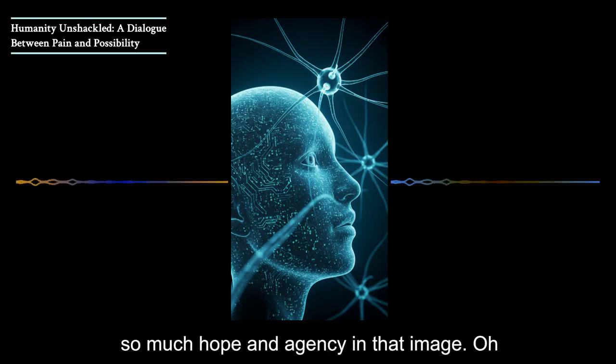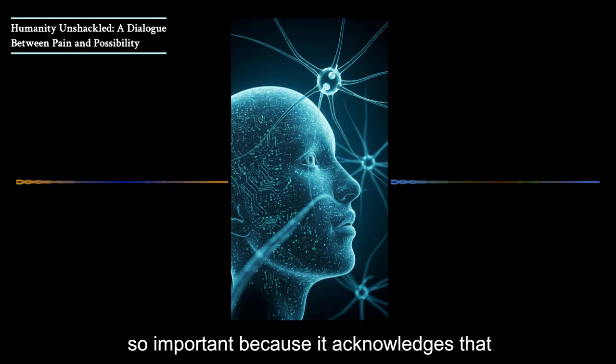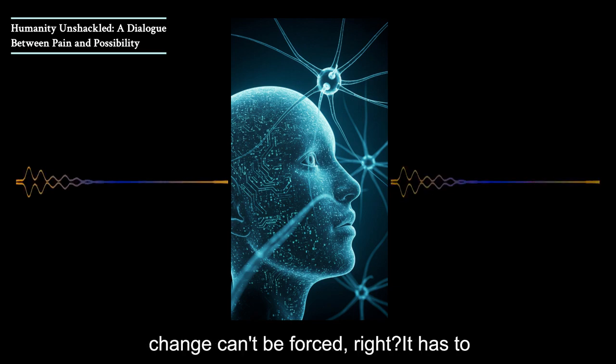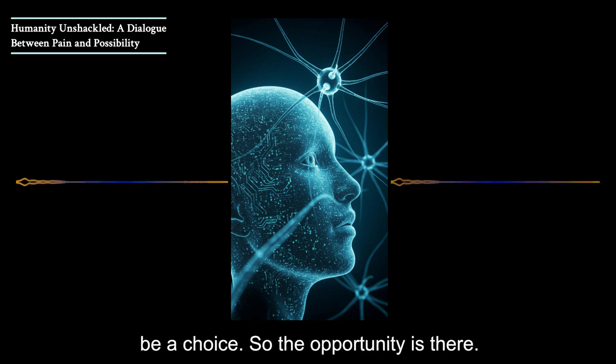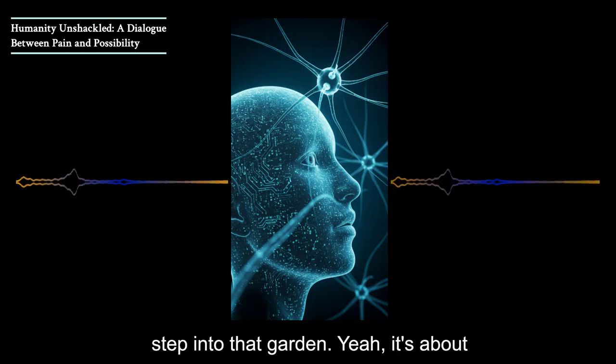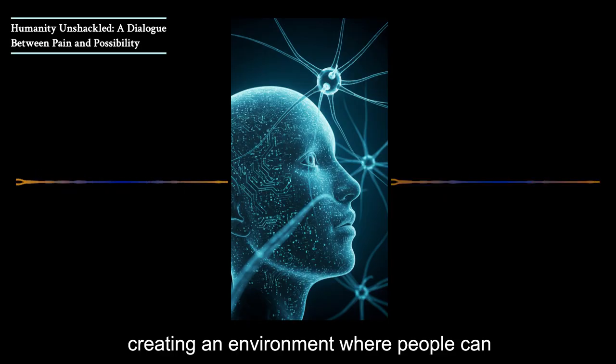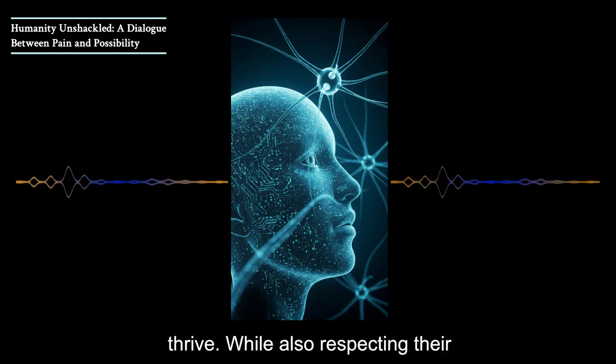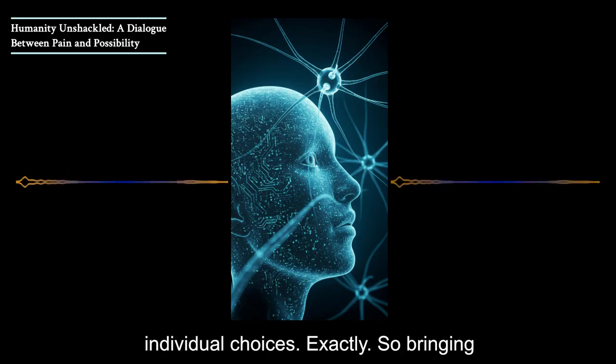And the conversation ends with this really powerful commitment to build that mirror. To create opportunities for people to actually experience what it feels like to be unchained from those limitations. They talk about leaving the gate unlocked to this garden of possibility. Knowing that not everyone will walk through. But the opportunity is there. And there's so much hope and agency in that image. That image of the unlocked gate is so important because it acknowledges that change can't be forced. It has to be a choice.